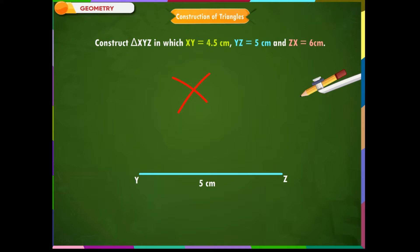X has to be on both the arcs drawn. So it is the point of intersection of arcs. Mark the point of intersection of arcs as X. Join XY and XZ.